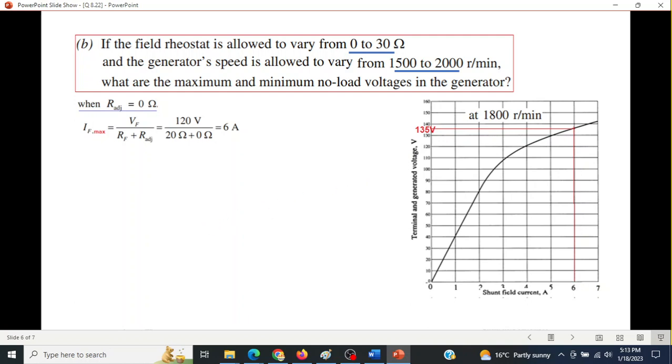Now, since the speed is different, we have to use the formula that I mentioned. Now, for IF maximum, we have to use the maximum value of speed, because maximum speed generates maximum voltage. So, for the magnetizing curve, Ea0 at 1800 rpm is 135. Since the actual speed is 2000 rpm, we have to use this formula.